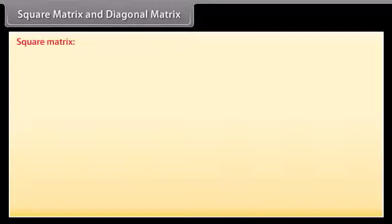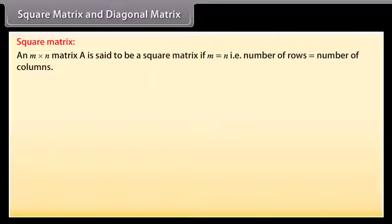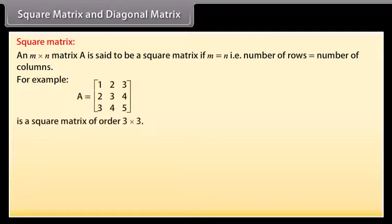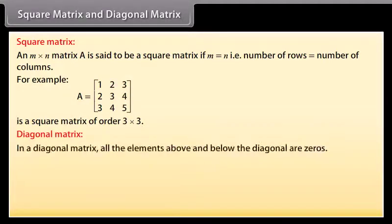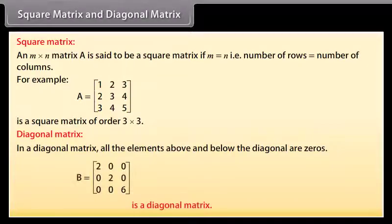Square matrix. An M by N matrix A is said to be a square matrix if M equals N, that is the number of rows equals the number of columns. For example, A is a square matrix of order 3 by 3. Diagonal matrix. In a diagonal matrix, all the elements above and below the diagonal are zeros. For example, B is a diagonal matrix.